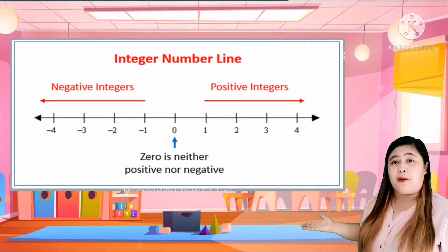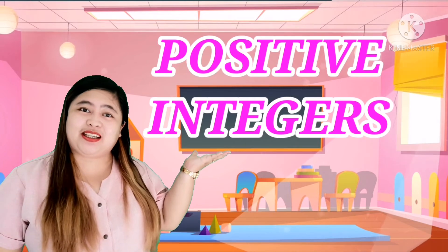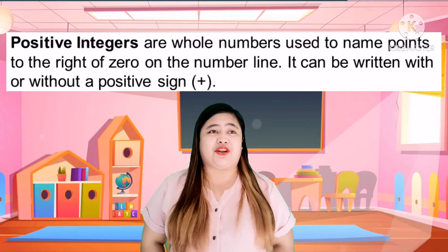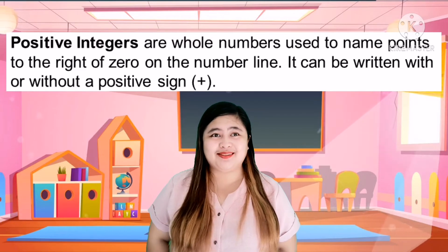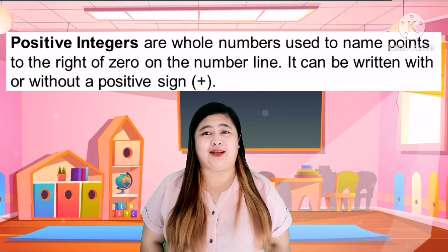Integers are of two types: positive and negative. On the number line or coordinate graph, positive integers are on the right side and negative integers are on the left side. They are all whole numbers. Positive integers are whole numbers used to name points to the right of zero on the number line. They can be written with or without a positive sign.